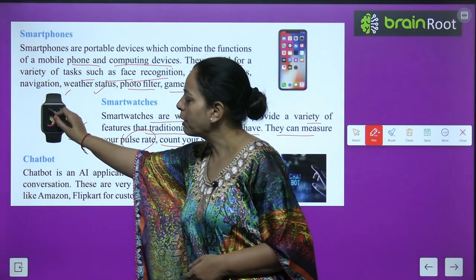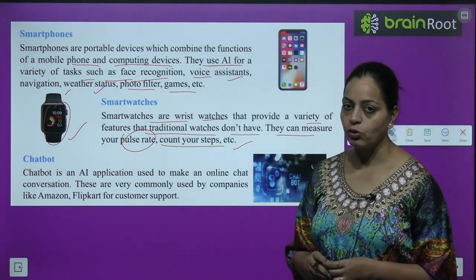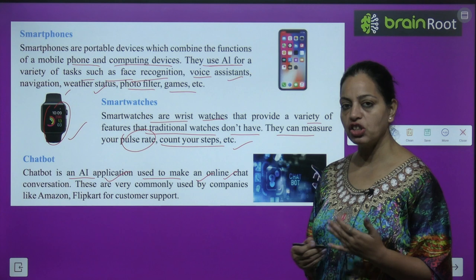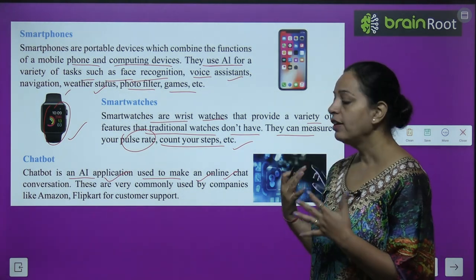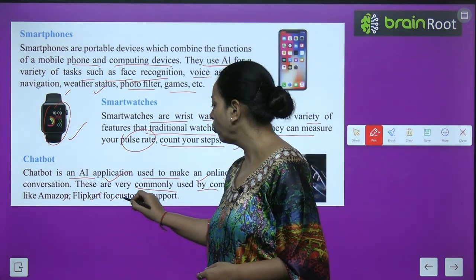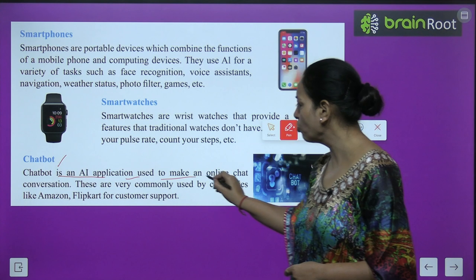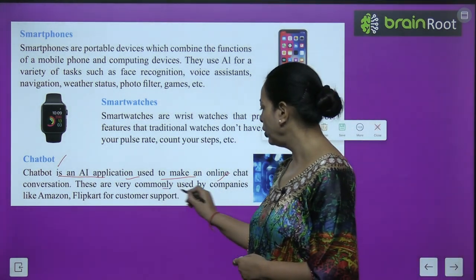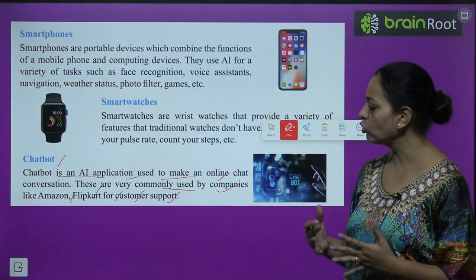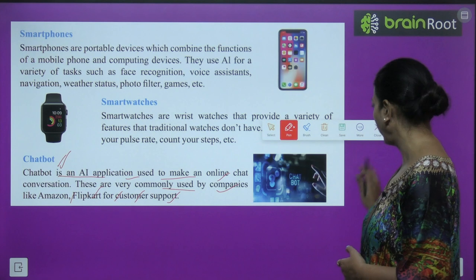On the smart watch screen, you can see how many steps you've covered and what your pulse rate is. Chatbot is an AI application used to make online chat conversations. These are very commonly used by companies like Amazon and Flipkart for customer support. You can also do video calling with friends easily using these applications.